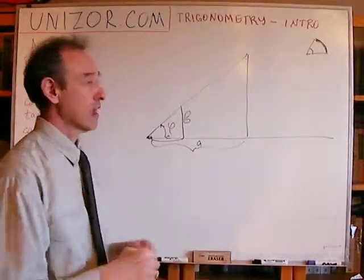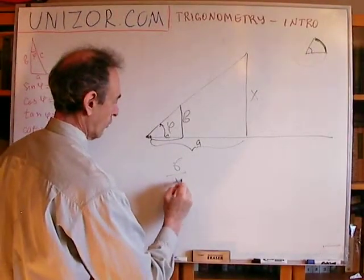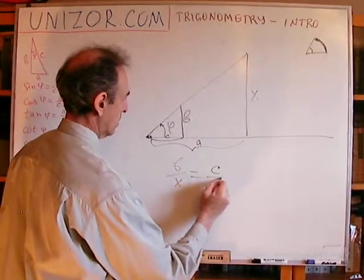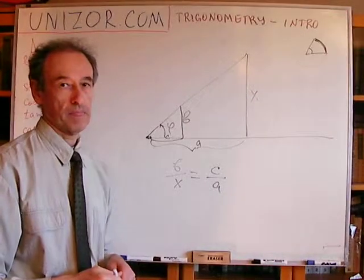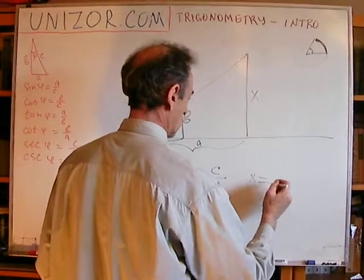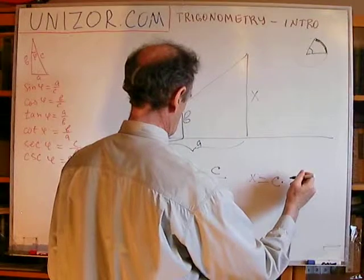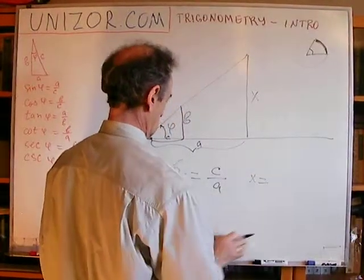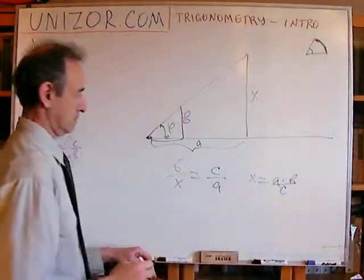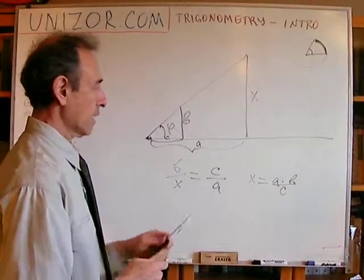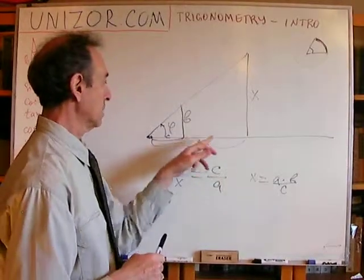Obviously, these two right triangles are similar. Now, similar triangles have proportional sides. So basically what I can say is that B over X is equal to C over A. Now, B I know, A I know, and C I know, and that's how we can get X. So X is equal to C times A over B. This is how we can actually find the height of the mountain. A can be measured.